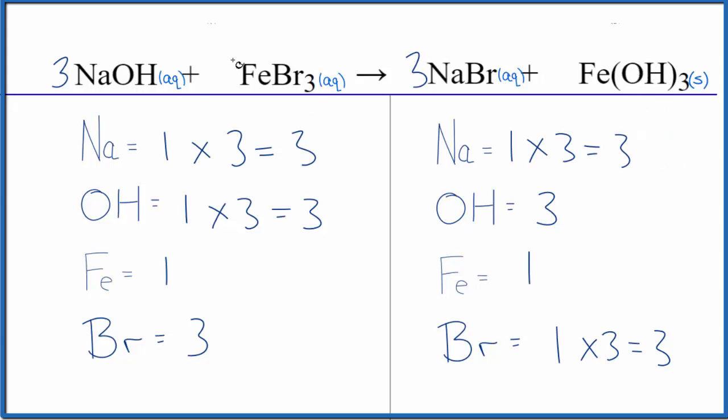This is Dr. B with the balanced equation for NaOH plus FeBr3, sodium hydroxide plus iron three bromide. And again, this is a double displacement reaction. Our iron hydroxide is the precipitate. Thanks for watching.